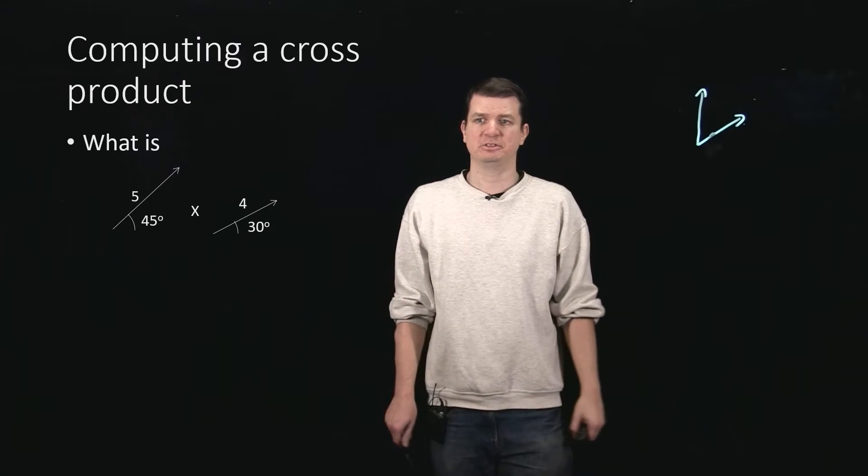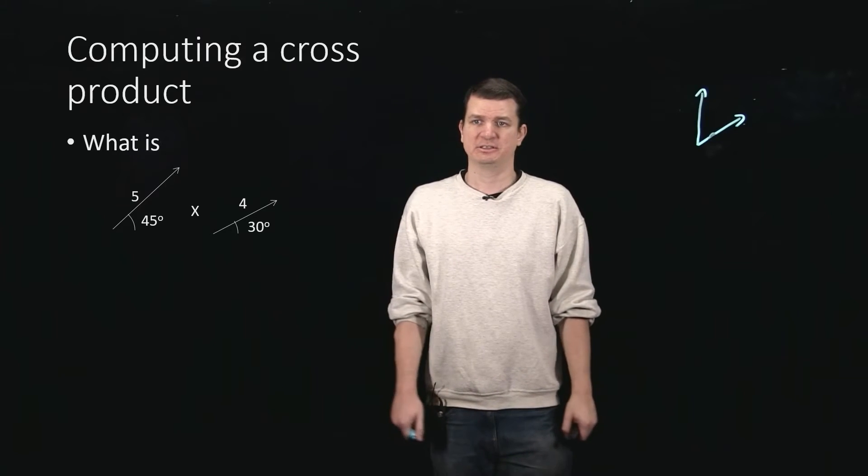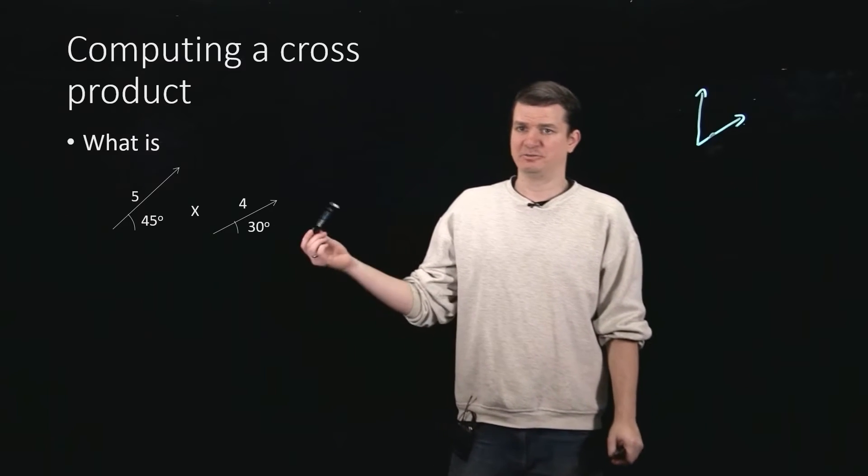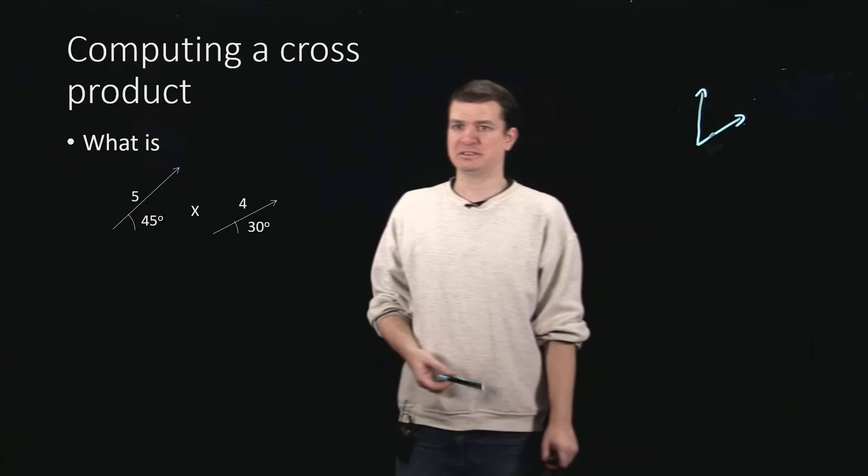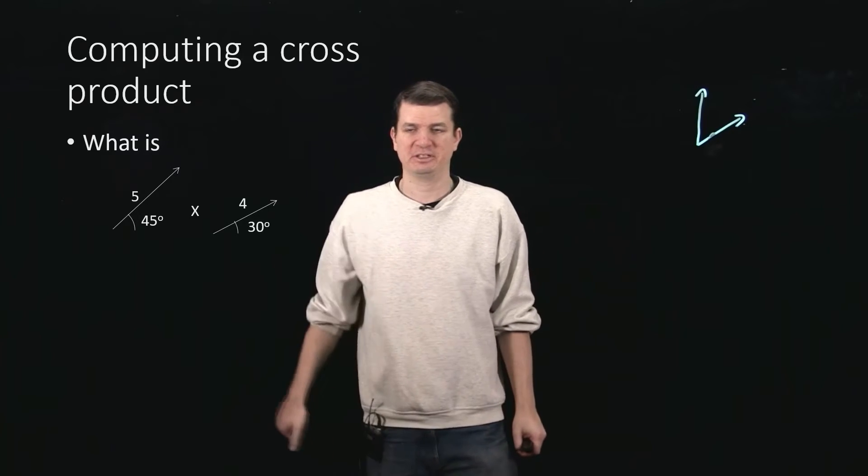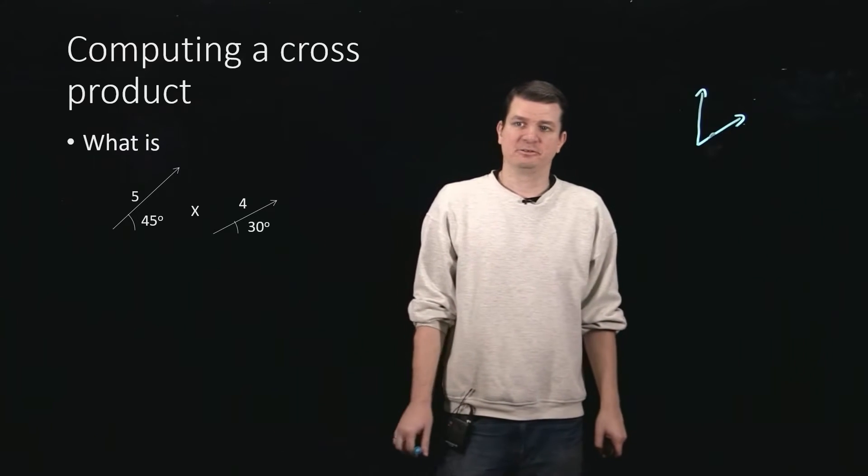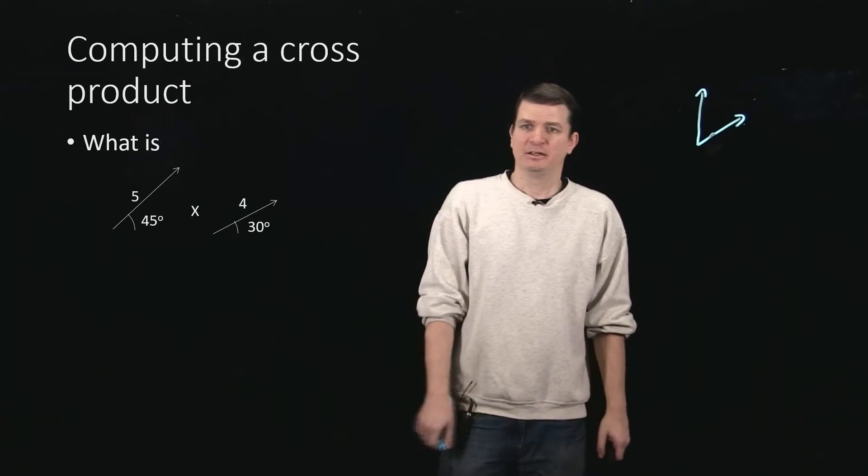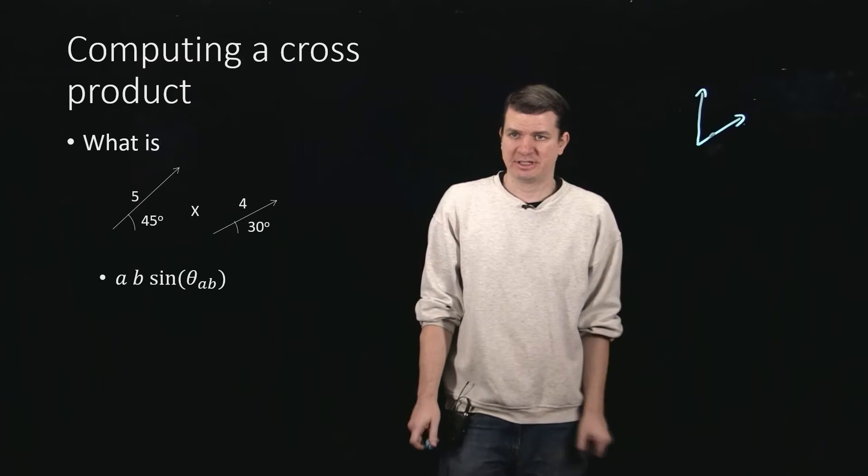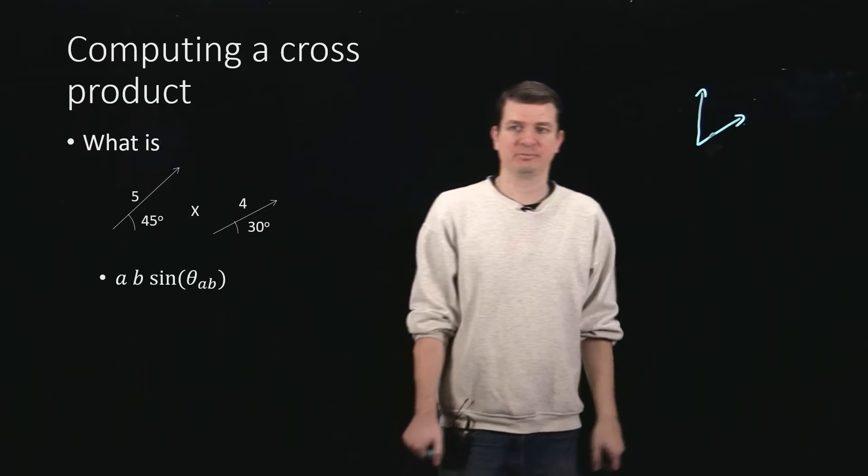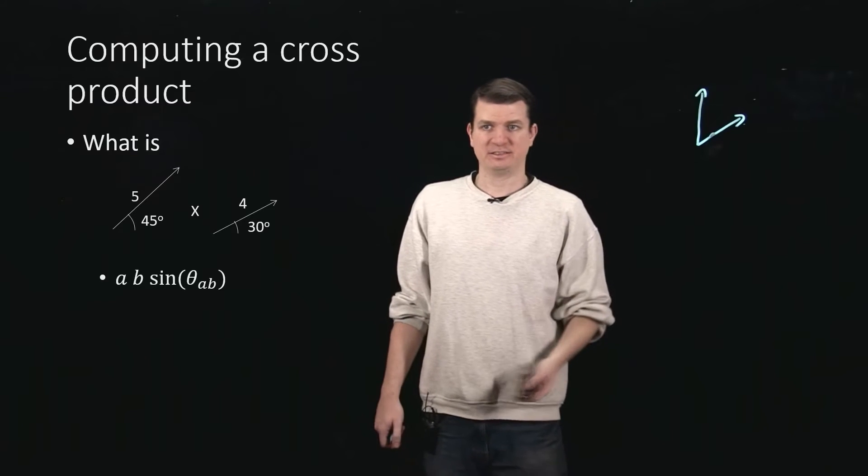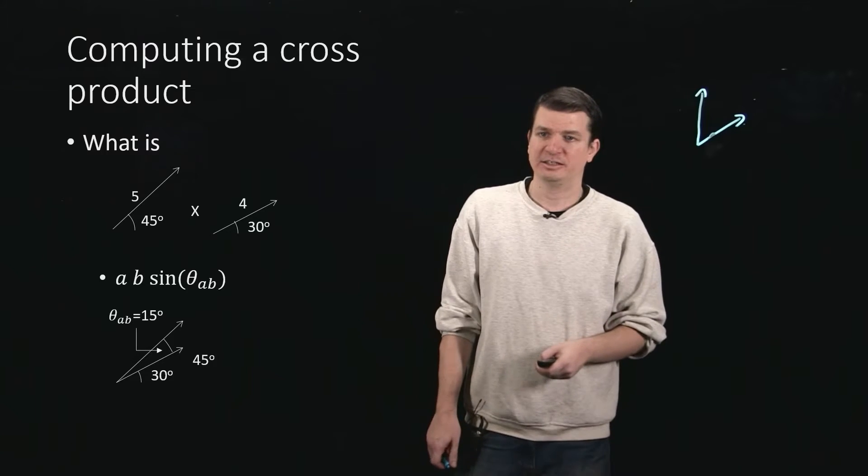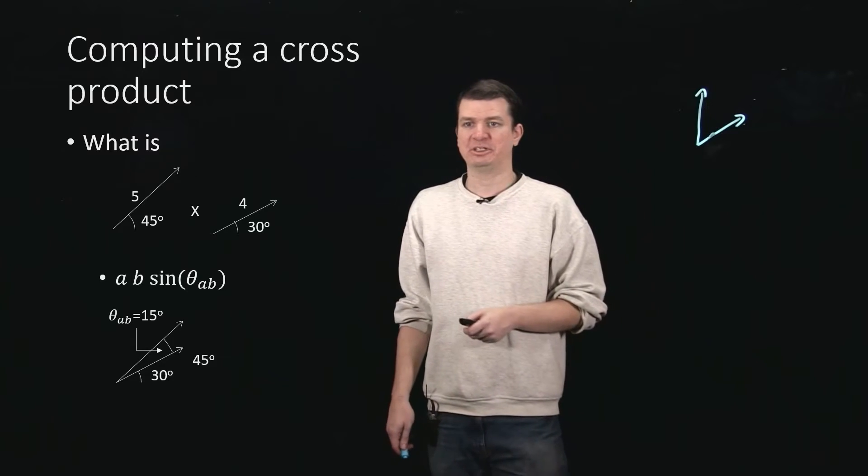So let's go ahead and compute a cross-product, in a little bit more detail than just using the right-hand rule. We've got here two vectors. You may recognize them as the ones we were using in the dot product video. We're now going to take the cross-product and see what we get. We compute this as a times b times sine of the angle between them. Just as in the case of the dot product, we put them next to each other so that the tails are aligned, and then we can easily identify what the angle between them is.